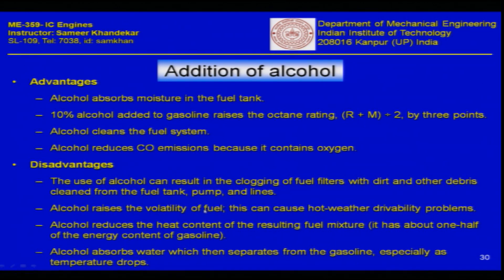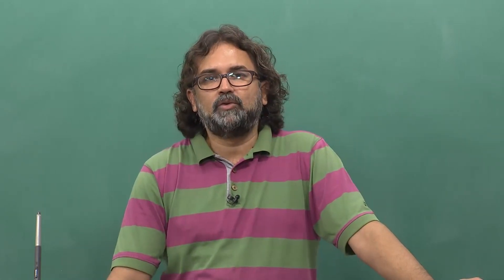Alcohol raises the volatility of the fuel, which can cause hot weather drivability problems, as vapour formation in fuel lines makes it difficult to run such fuels in very hot conditions. Alcohol also reduces the heat content of the fuel mixture — comparing the heat of combustion of alcohol to typical petrol components, it is roughly half. So while adding alcohol increases octane rating and reduces emissions, the energy per kilogram of the blend is lower, meaning more fuel inventory is needed to achieve the same engine power output.